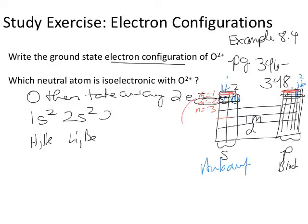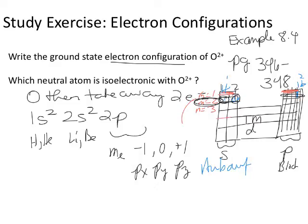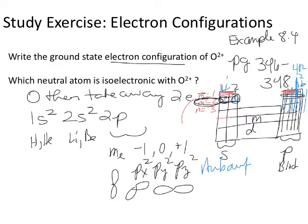In row 2, the S block gives us 2s2 for lithium and beryllium. Then we move to the 2p block, still in row 2. The m_sub_l (angular momentum) tells us there are 3 p orbitals: -1, 0, +1, which I think of as px, py, and pz. Each p orbital is a dumbbell shape and holds 2 electrons, giving 2, 4, 6 electrons across the 6 p-block columns. Oxygen is in the 4th p position, giving us 1s2 2s2 2p4 as the ground state configuration.